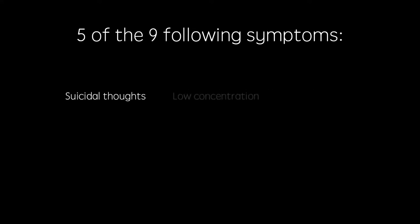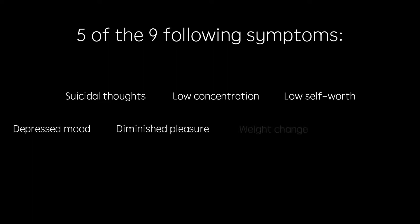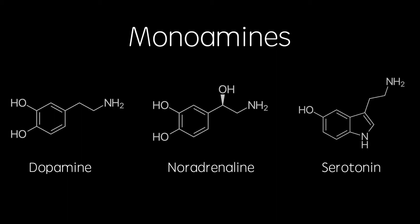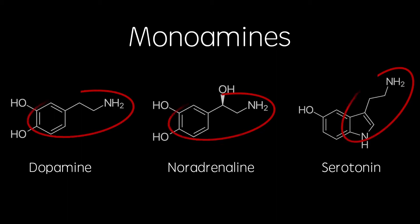Depression is a condition characterised by the presence of five of the following nine symptoms, and affects almost a fifth of the entire UK population. The main hypothesis for the cause of depression is known as the monoamine hypothesis. Monoamines are a group of neurotransmitters characterised by their aromatic rings, which are connected to an amine group by a chain of two carbons. The monoamine hypothesis suggests that depression is caused by insufficient quantities of monoamines in the synapses of the brain.